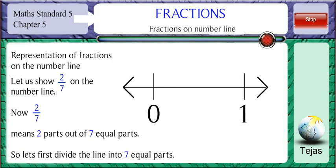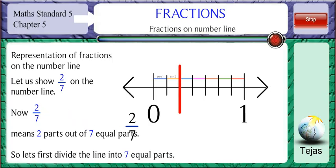Let us show 2 by 7 on the number line. 2 by 7 means 2 parts out of 7 equal parts. So let us first divide the line into 7 equal parts. Now 2 by 7 means 2 parts out of 7. So we consider part 1 and part 2 on the number line. This would be 2 by 7 or 2 parts out of 7 on the number line.